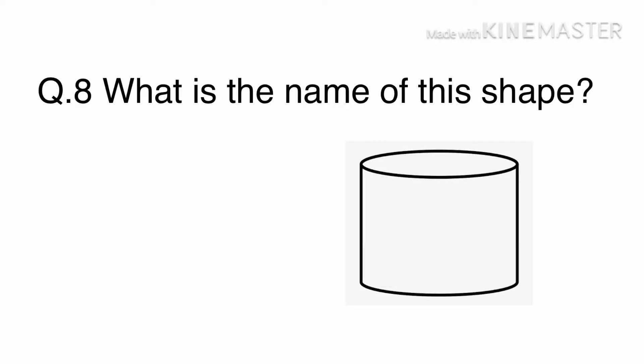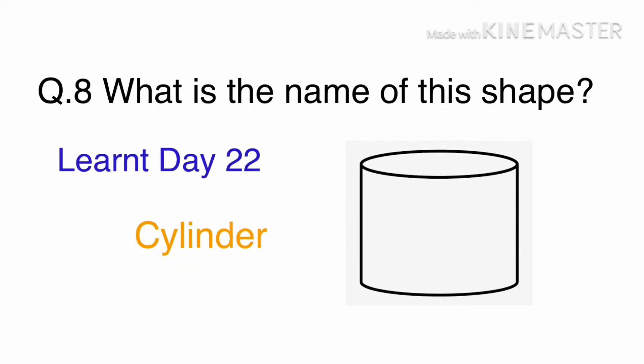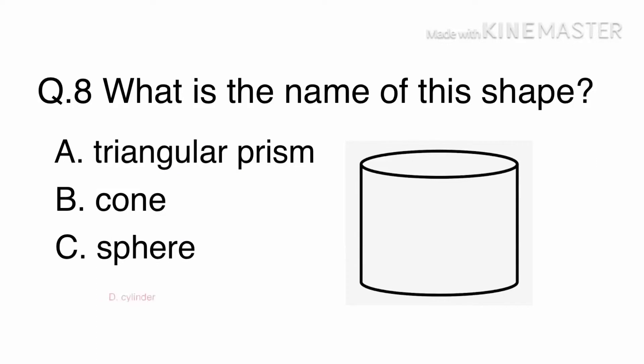Question 8: What is the name of this shape? A. Triangular prism, B. Cone, C. Sphere, or D. Cylinder. We already learnt about cylinders on day 22. The answer is D, cylinder.